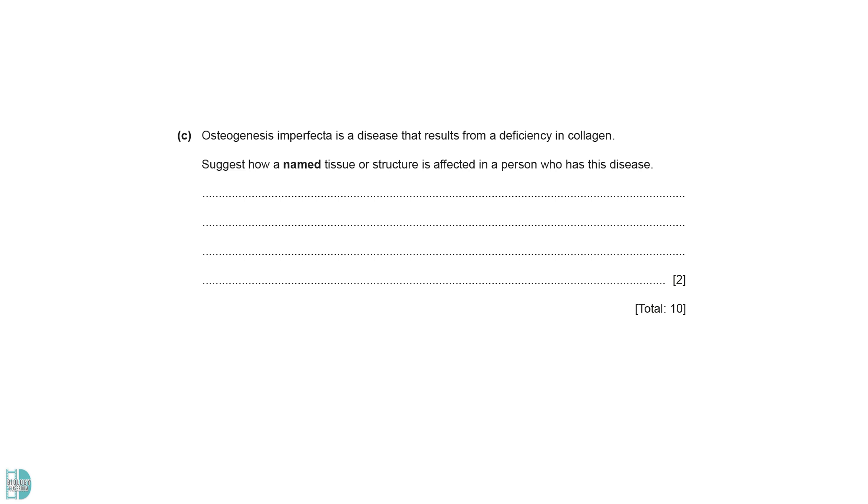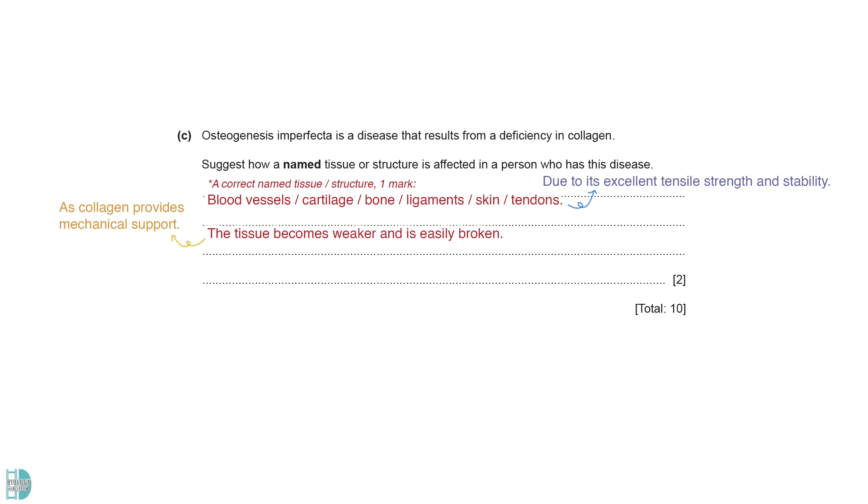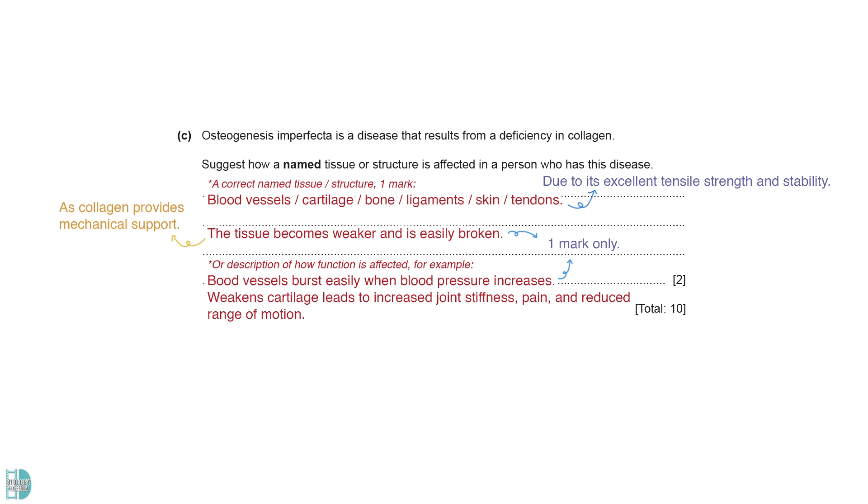C wants you to suggest how a named tissue or structure is affected in a person who has a collagen deficiency. Due to its excellent tensile strength and stability, collagen plays an important structural role in our body parts, such as the walls of blood vessels, cartilage, and skin. Without their mechanical support, these structures become weaker and may be easily broken or ruptured. You can also get this mark by describing how this may affect the function of the tissue or structure.